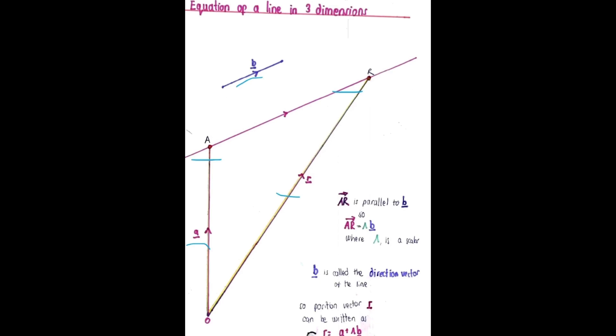B is called the direction vector of the line. So position vector R can be written as R equals A plus lambda B and this is called a vector equation of a straight line.